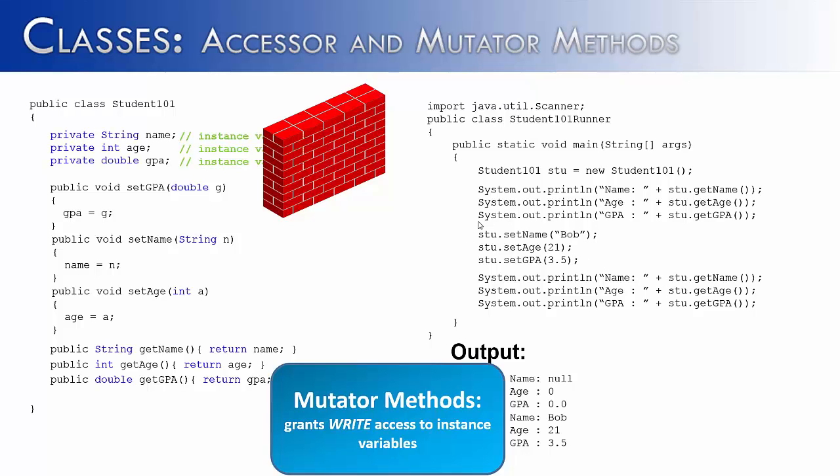Now we've looked at both mutator and accessor methods. Accessor methods start with the word get, often mutator with the word set. So instead of being called accessor and mutator methods, they're called getters and setters.